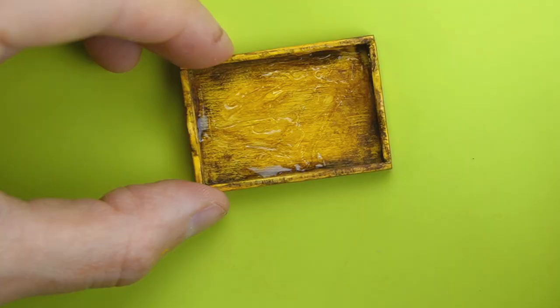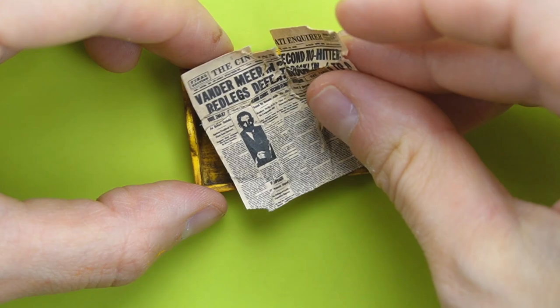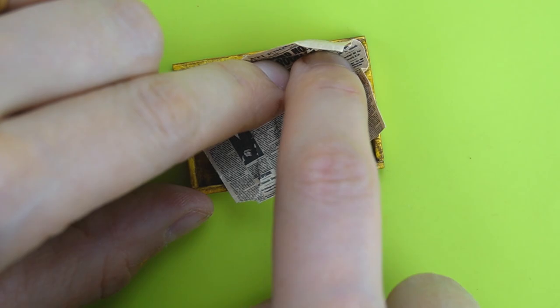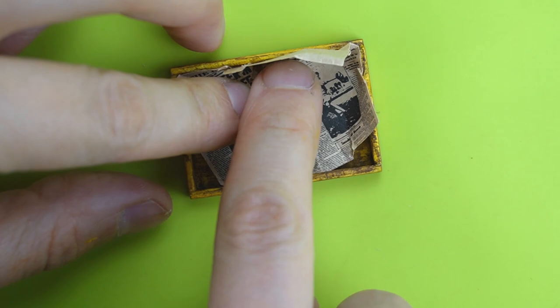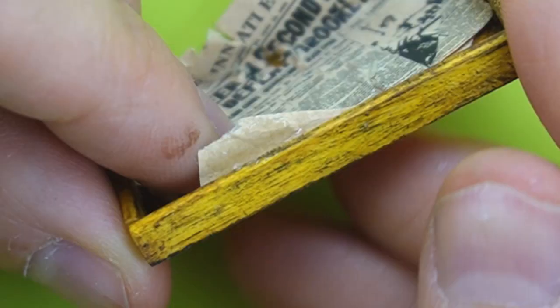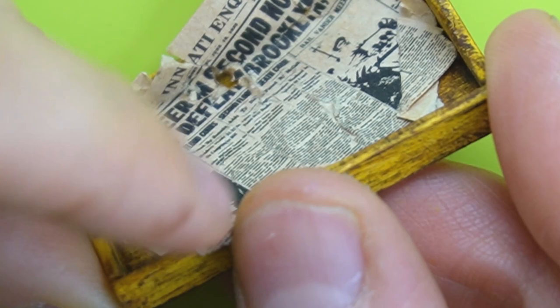To finish off the tray I lined it with some miniature newspaper. I got this in a random lot of miniatures but you can print stuff like this right from the internet. I glued down the edges to disguise the fact that this newsprint is only one sided.